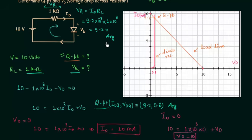This is how you find the operating point using the VI characteristics of the diode and the load line. Once you have the operating point, you know the operating current, and from that you can easily find the voltage across the resistor. That's all for this lecture — see you in the next one.